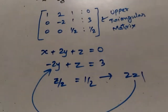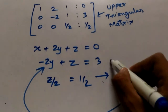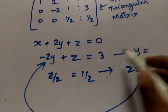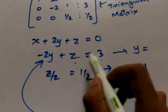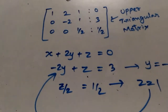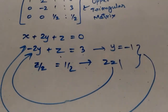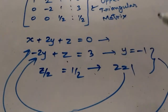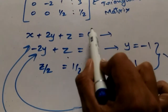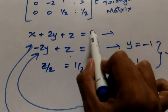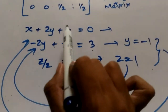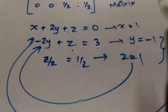Putting z equals 1 into the second equation, we get y equals 3 minus 1, which is 2, divided by minus 2, giving y equals minus 1. Now putting these into the first equation, we get x minus 2 plus 1 equals 0, that is x minus 1 equals 0, which means x equals 1.